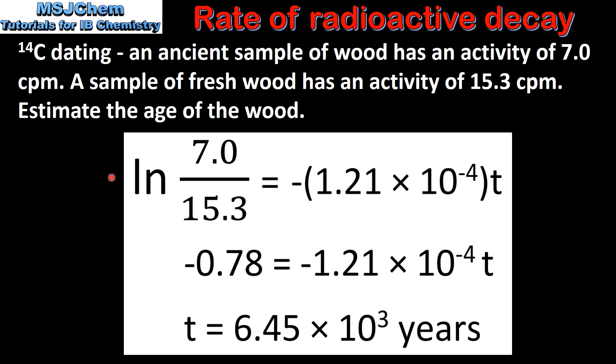So once again we use the integrated form of the rate equation. We have the original activity at time equals zero and the activity at time t. We also have the decay constant from the previous example. When we solve the equation we get a time of 6.45 times 10 to the 3 years.